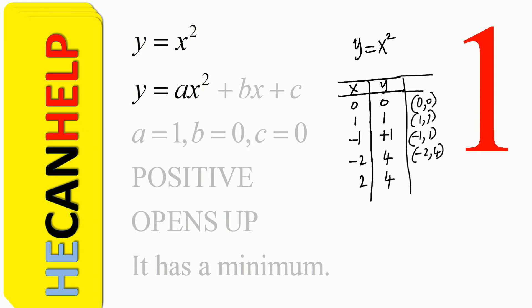So what is our ordered pair? Our ordered pair is (0,0), (1,1), (-1,1), (-2,4), (2,4), and so on. Why is it x squared? So if y is equal to ax squared plus bx plus c, for us b is zero, there is no x term. c is zero, there is no c.